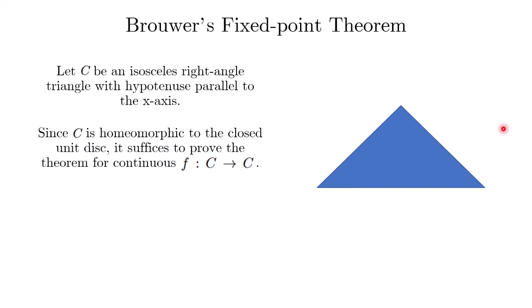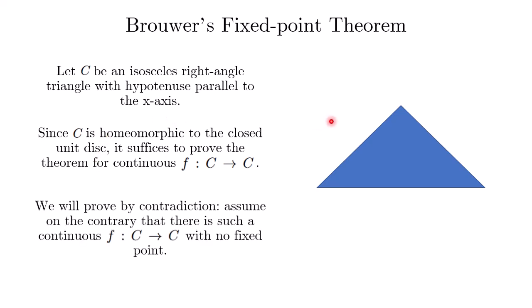Rather than proving the fixed point theorem for the closed unit disk, we are going to prove it for the isosceles right angle triangle where the hypotenuse is parallel to the x-axis. We can do this because this triangle is homeomorphic to the closed unit disk. We'll prove by contradiction, assuming we can find a continuous function from the triangle to itself with no fixed point.